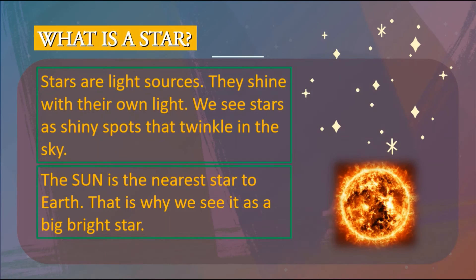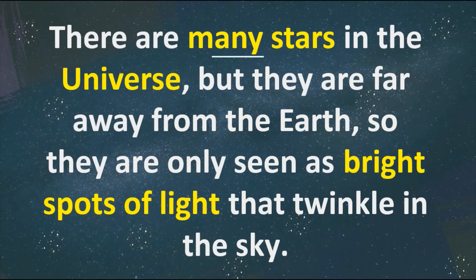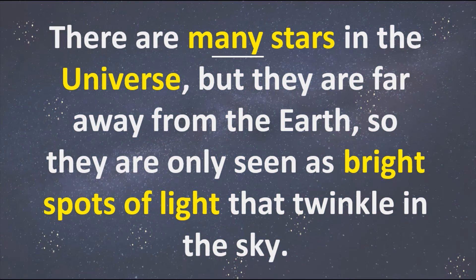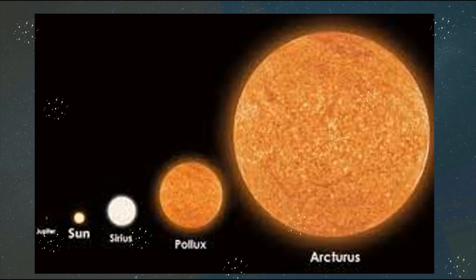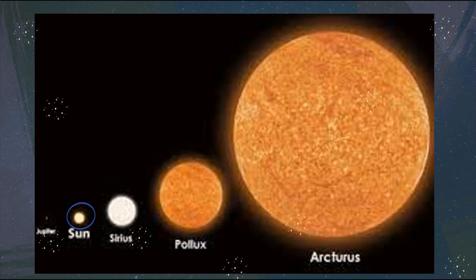The sun is the nearest star in our solar system. That's why we can see it as a very, very big ball of fire. But did you know that there are many stars in the universe? They are far away from the Earth, so they are only seen as bright spots of light that twinkle in the sky. If you compare planet Jupiter — the biggest planet in our solar system — to the sun, it becomes very, very small. But if you compare our sun to other stars in the universe, our sun is not that big, because there are other bigger stars like Sirius, Pollux, and Arcturus. You can refer to page 239 for a clearer picture of this.